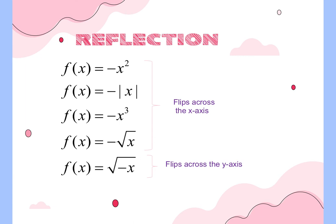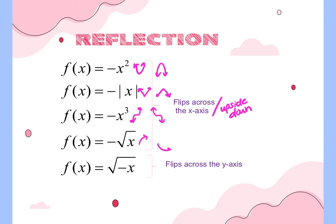A reflection is caused by a negative sign either in front of or inside the function. If the negative is on the front outside — in front of the x squared, the absolute value, the x cubed, or the square root — it causes a flip across the x-axis, which just means it flips upside down. A parabola that normally points up now points down; the absolute value V flips upside down; the cubic that goes up-right and down-left flips the other direction; the square root that points up-right now points down.